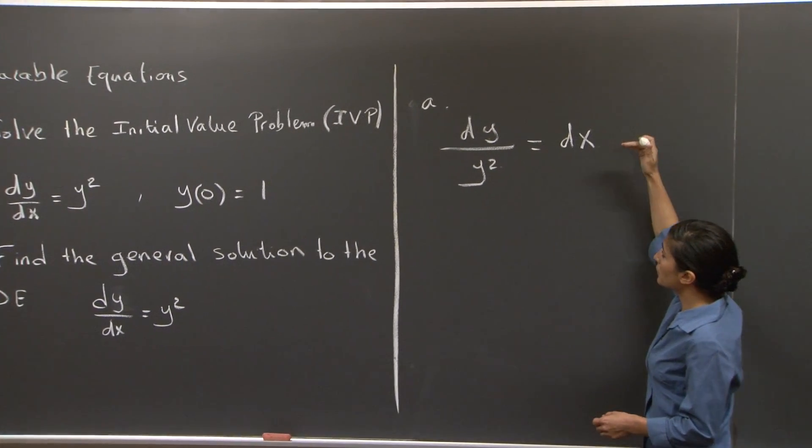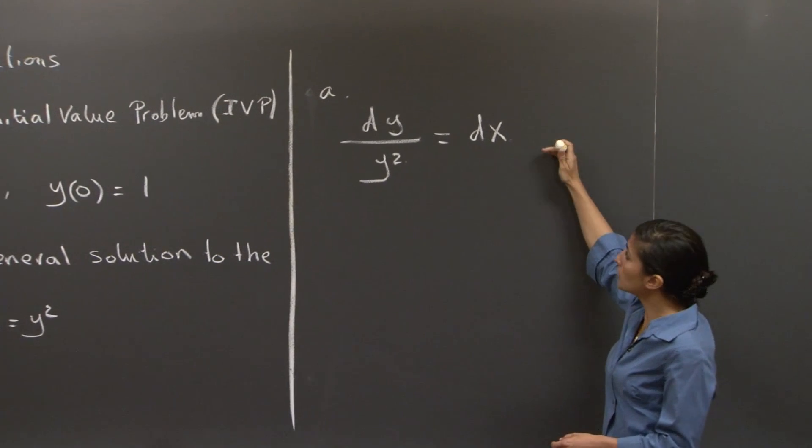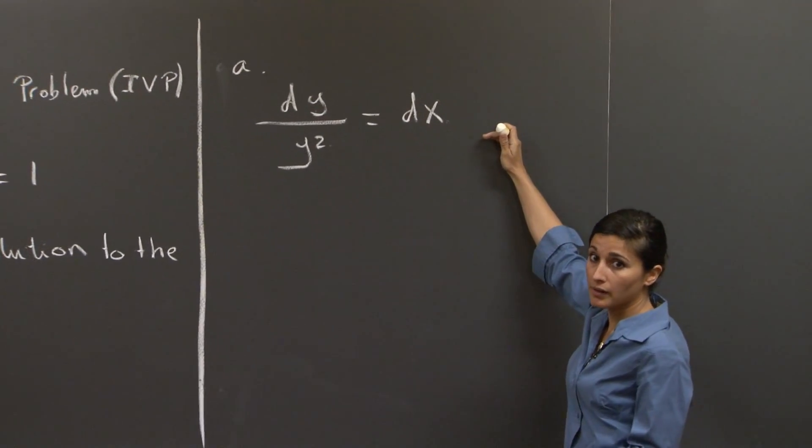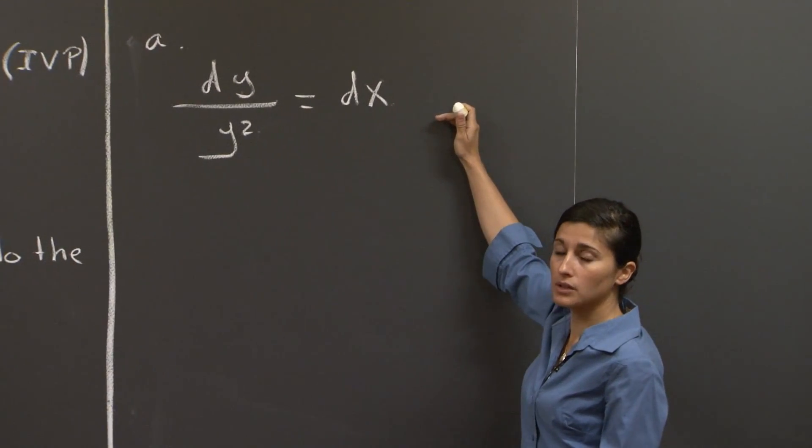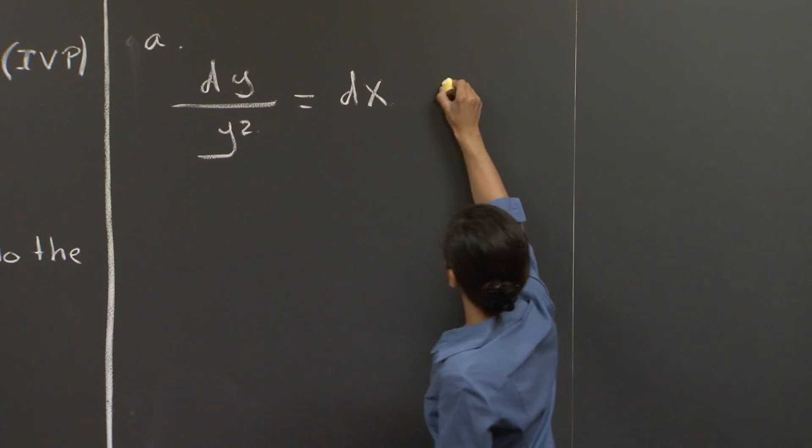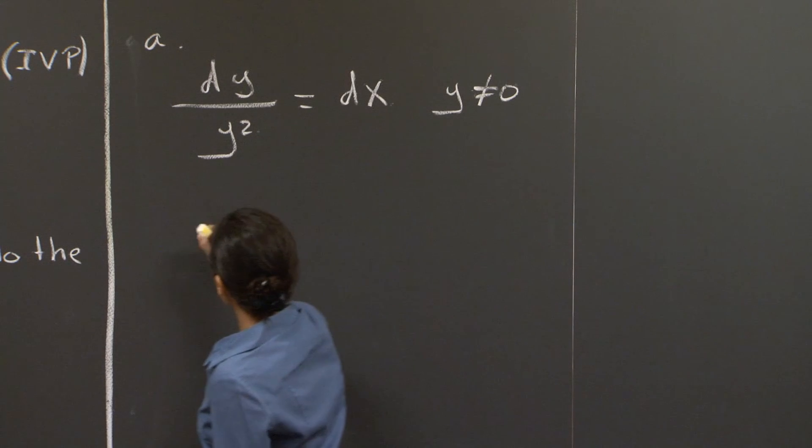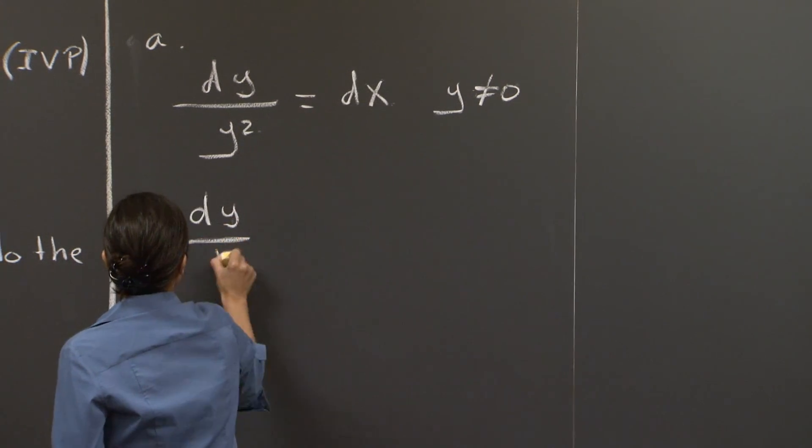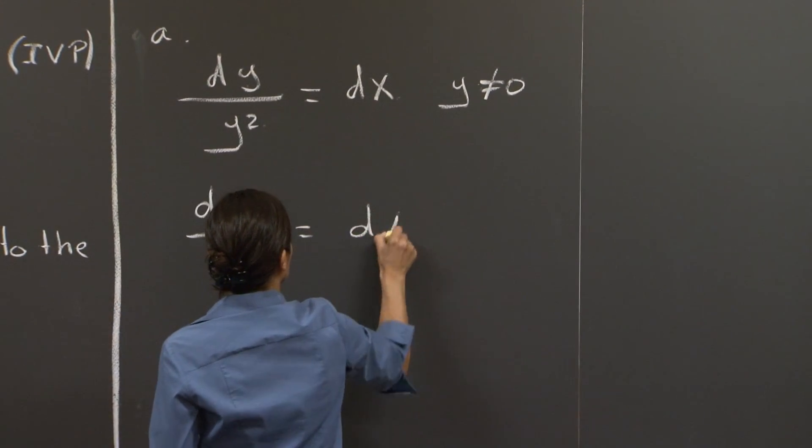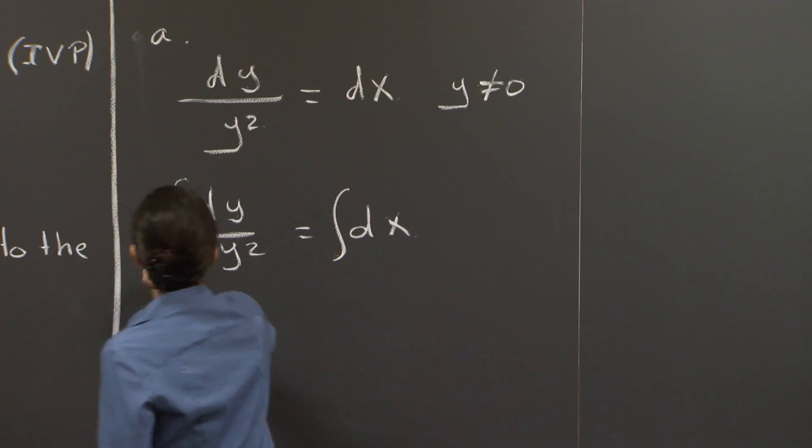For this step, notice that I divided by y squared, which means that we need to impose the condition y not equal to 0 from now on. So from this step, we just use indefinite integrals to integrate both sides of the equation.